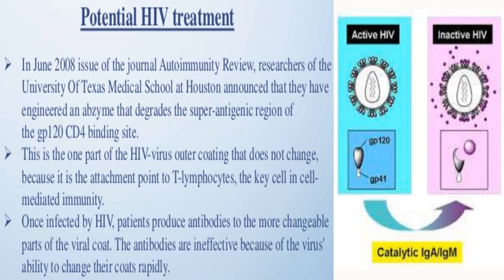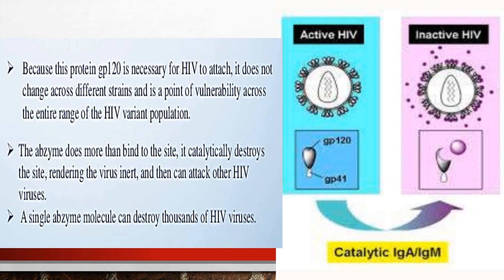The GP120 CD4 binding site is one part of the HIV virus outer coating that does not change, because it is the attachment point to T lymphocytes — the key cells in cell-mediated immunity. Once infected by HIV, patients produce antibodies to the more changeable part of the viral coat. These antibodies are ineffective because of the virus's ability to change its coat rapidly. Because the protein GP120 is necessary for HIV to attach, it does not change across different strains and is a point of vulnerability across the entire range of HIV variant populations.